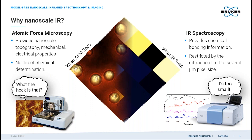On the other hand, infrared spectroscopy can provide information on different chemical species that are present as well as their distribution, but it's limited to a few microns at best in the mid-infrared region due to the diffraction limits.